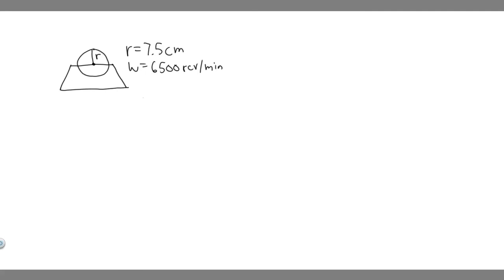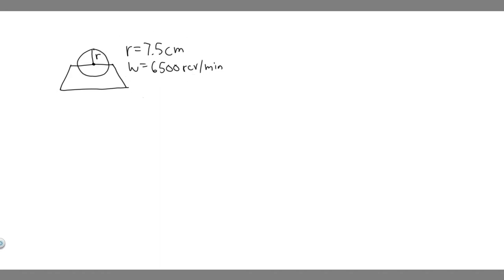In this problem, we're told an ordinary workshop grindstone has a radius of 7.5 centimeters and rotates at 6,500 revolutions per minute. So what we have here is this grindstone — its radius is 7.5 centimeters, and they give us the angular velocity omega, which is 6,500 revolutions per minute.